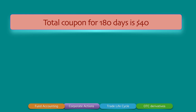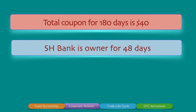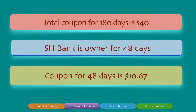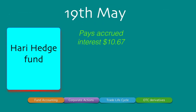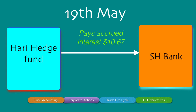The total coupon for 180 days is $40 (annual was $80, so semi-annual is $40). SH Bank was the owner for 48 days, following the UK markets day count convention. The coupon for 48 days is therefore prorated: 48 divided by 180, multiplied by $40. On the settlement date, Hari Hedge Fund pays not just the traded price but also the accrued interest of $10.67 to SH Bank. Hari Hedge Fund will receive the entire $40 coupon on 30th September but must make the accrued interest payment on the settlement date.